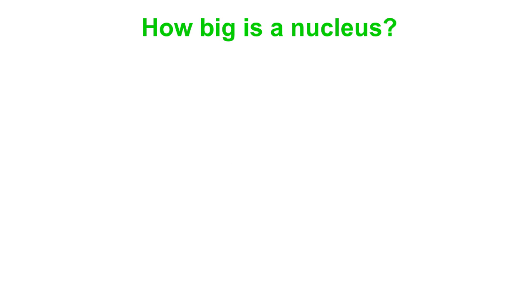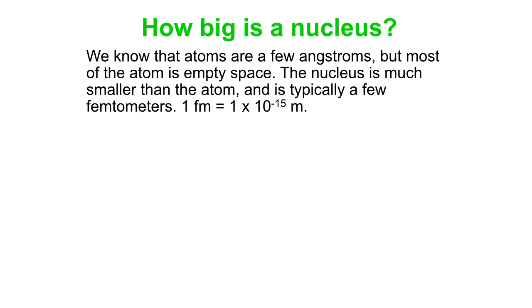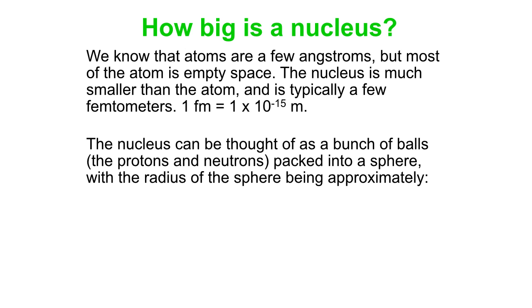How big do you think a nucleus is? We know atoms are the size of a few angstroms, 10 to the minus 10 meters, but almost all of that is empty space. The nucleus is way smaller. We call it femtometers, and a femtometer is 10 to the minus 15 meters. The radius is 1.2 times 10 to the minus 15 meters times A to the one-third, A being the number of protons plus neutrons.